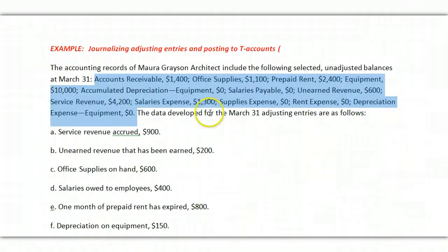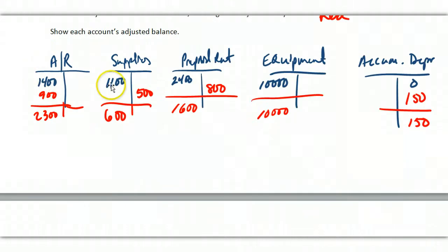Now notice up in here, it doesn't tell me which accounts are debits and credits, and yet I have put them in debit and credit. I've put them either as debits or credits, and I've done this based on the normal balance of the accounts.